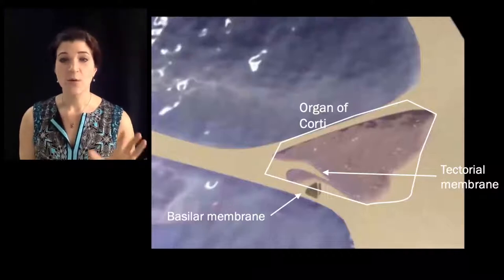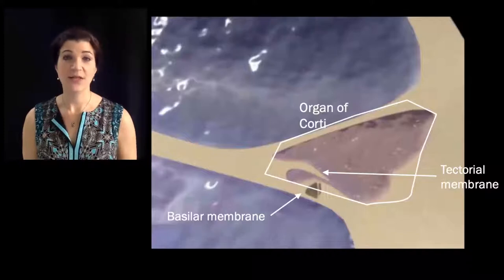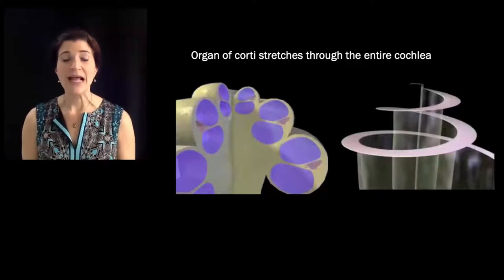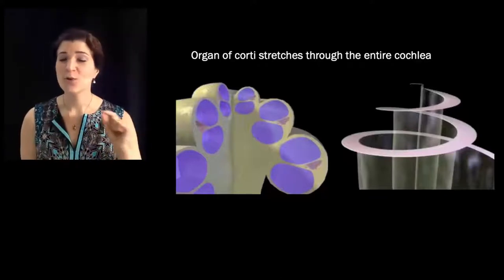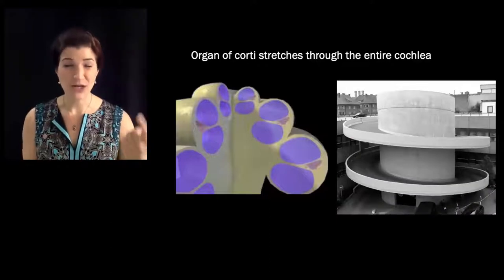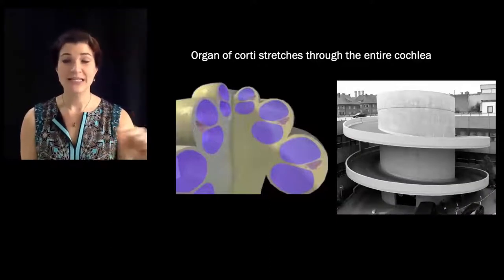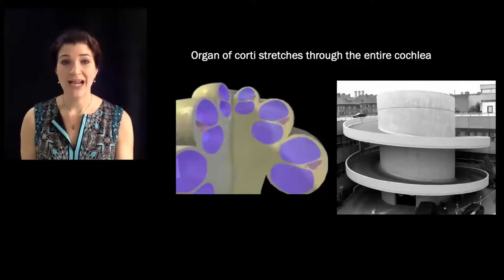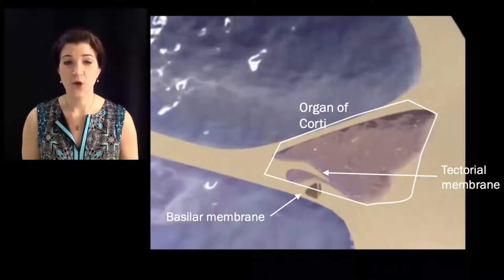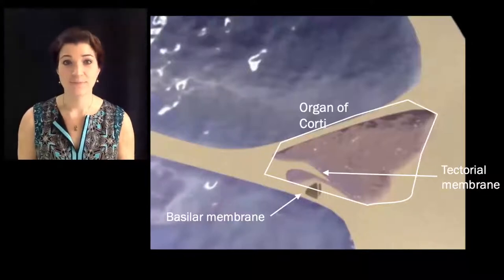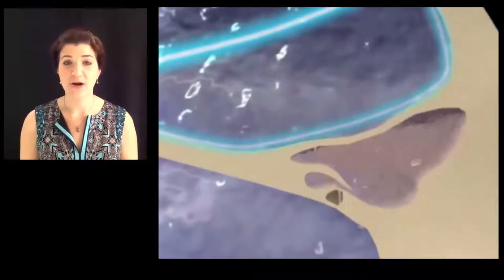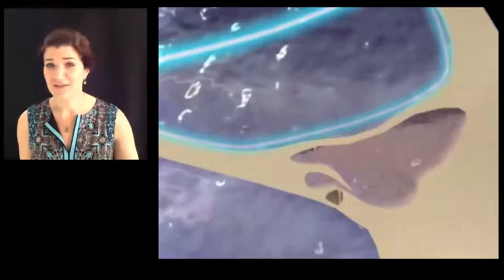The organ of Corti stretches continuously through the entire length of the cochlea. If we could look at the basilar membrane on its own, it would be a continuous spiral — it reminds me of spiral parking ramps at malls or the airport. As waves happen in the fluid of the cochlea, they push onto the membranes within the organ of Corti, rocking them in the gentle waves of the cochlear sea.